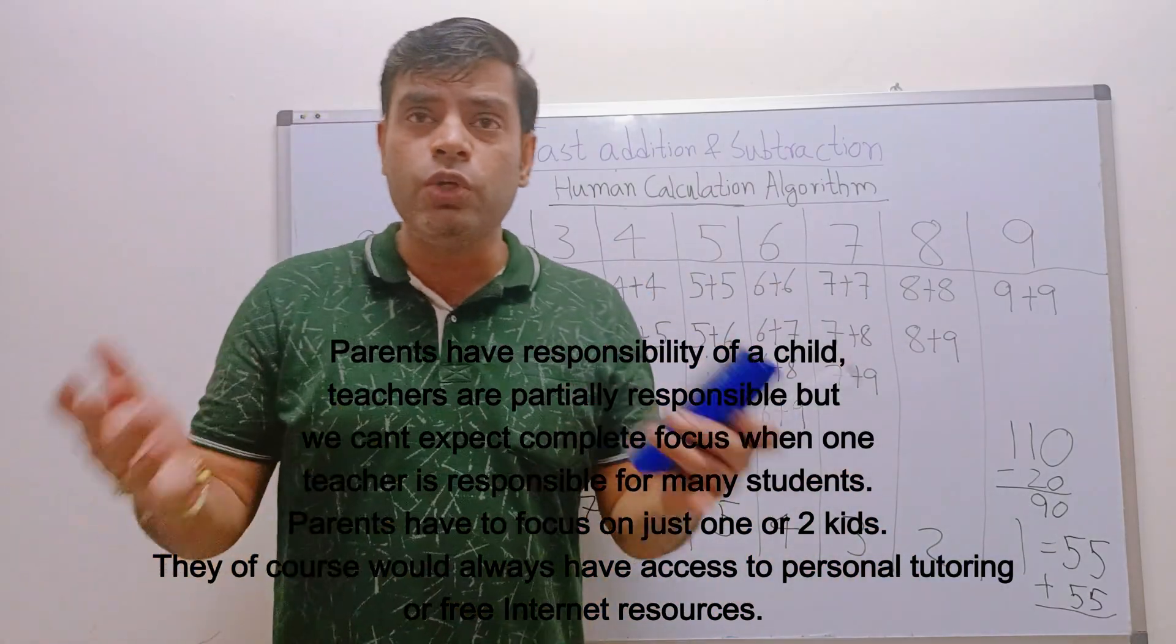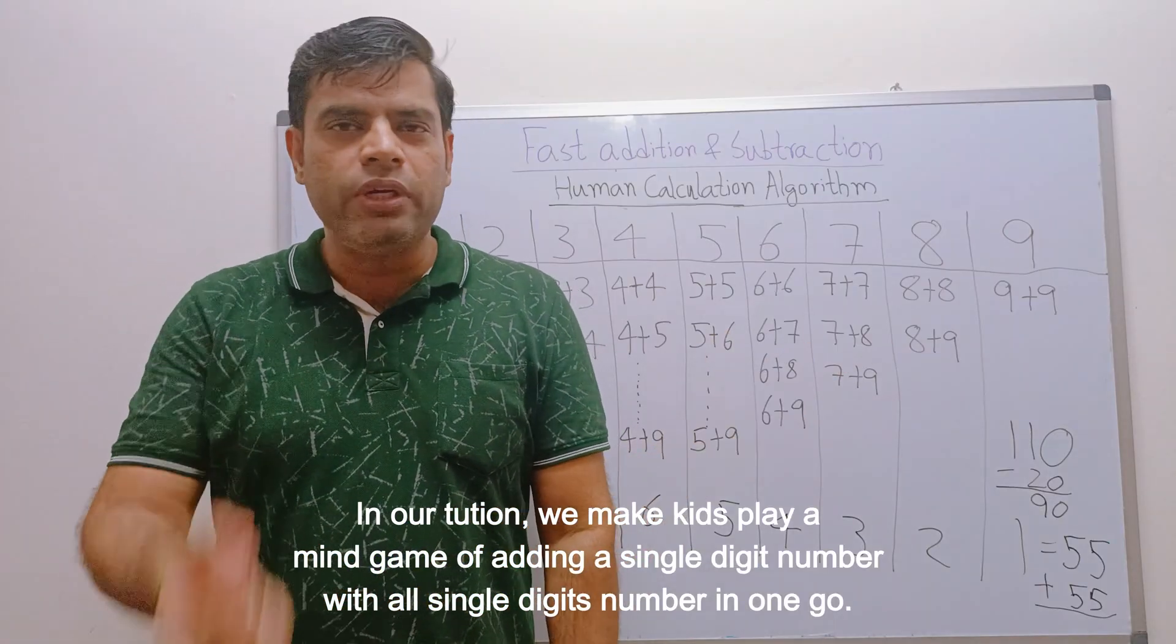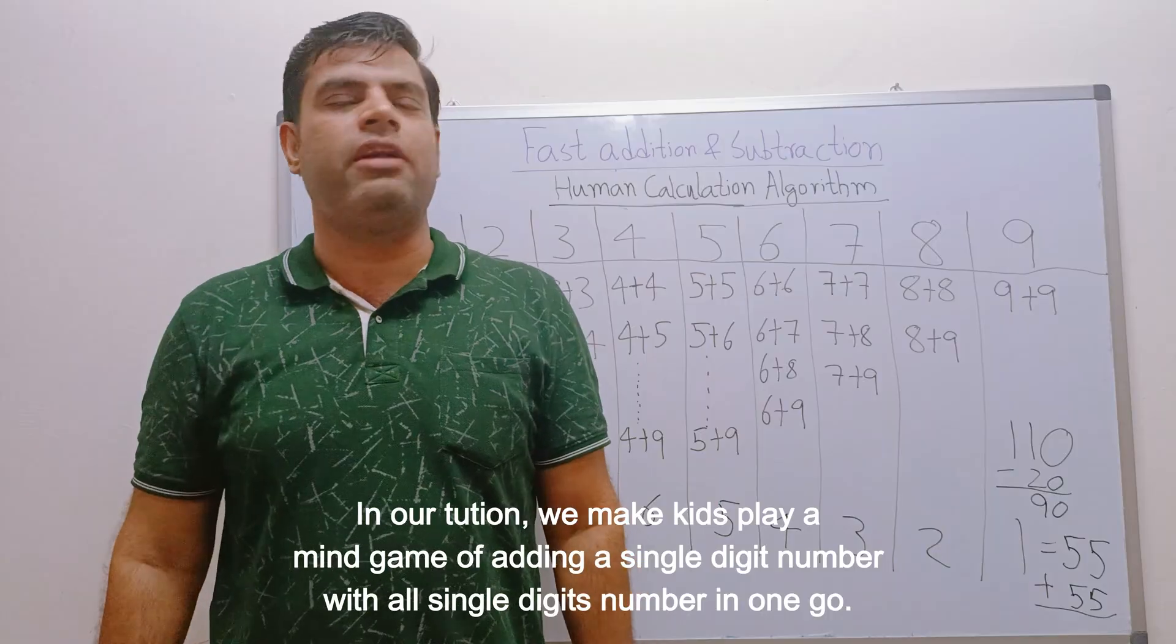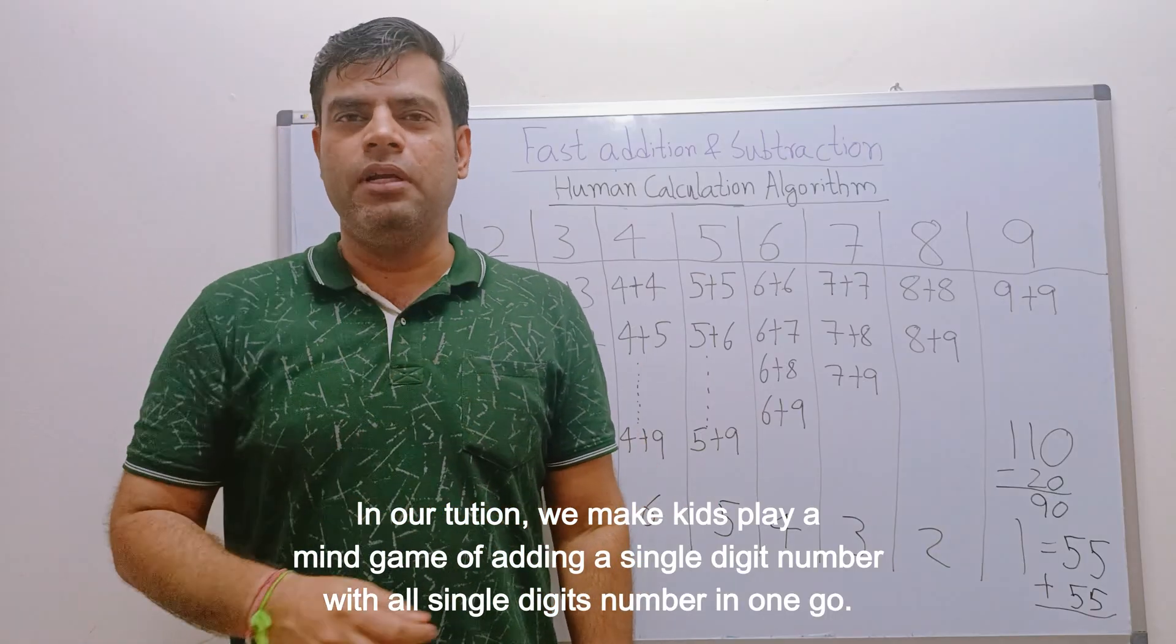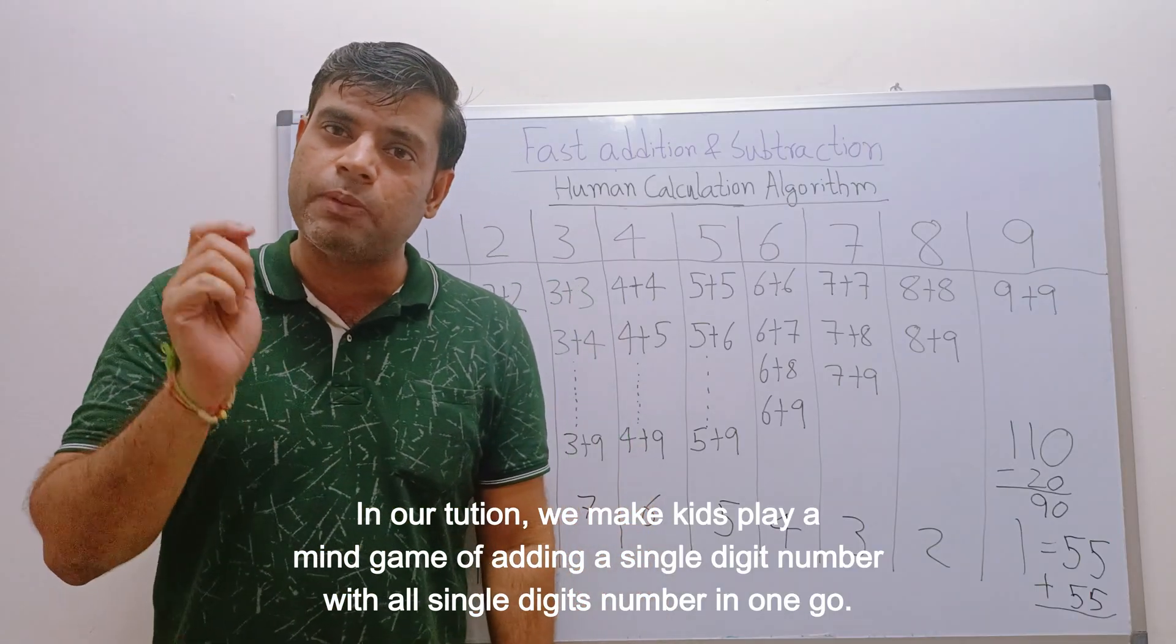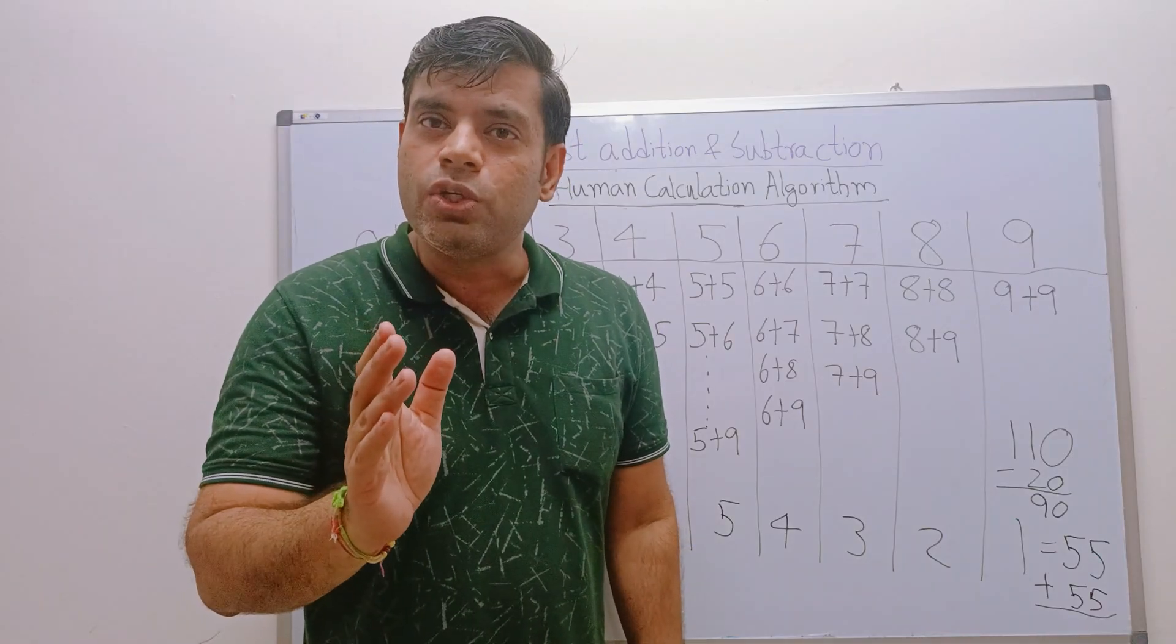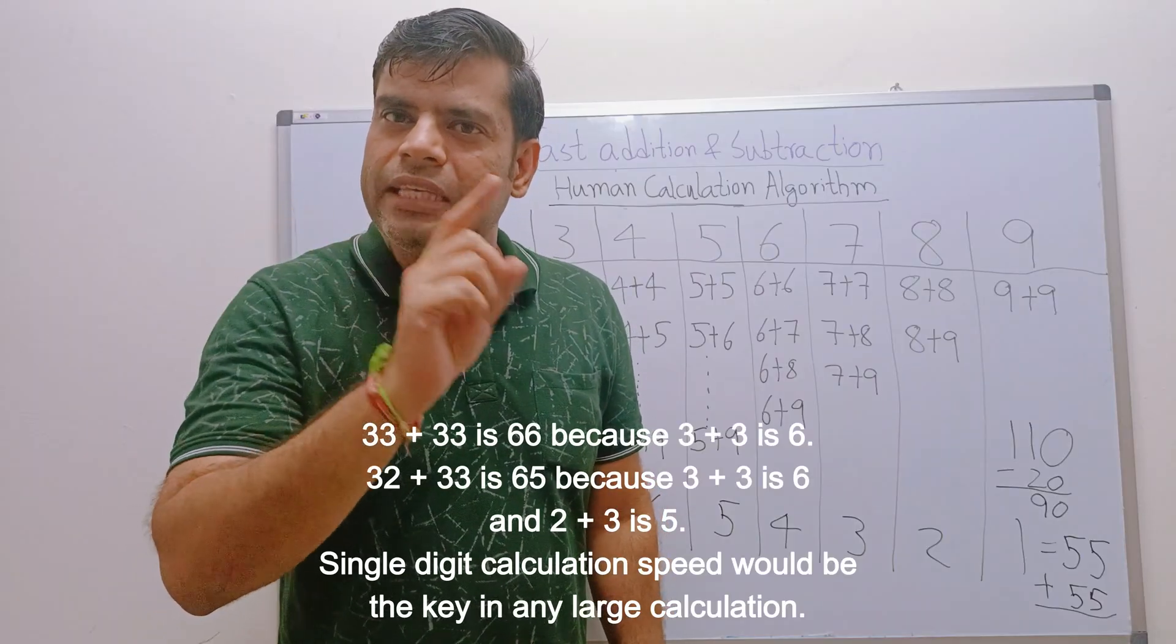Now question is who is going to take this responsibility? Please take the responsibility in your hand. And how we practice this? So in our tuition what we do, we tell kids, okay let's play a game. What you do, take one single digit number, let's take 3, and add all the single digit numbers, of course except zero because that is too simple. So take all the numbers and one by one add. For example: 3 plus 1 is 4, 3 plus 2 is 5, 3 plus 3 is 6, 3 plus 4 is 7, 3 plus 5 is 8, 3 plus 6 is 9, 3 plus 7 is 10, 3 plus 8 is 11, 3 plus 9 is 12.